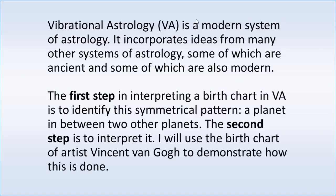So let's learn how we do this. Before I give you the steps for interpreting a chart using vibrational astrology, let me explain what vibrational astrology is. It's a modern system of astrology. It incorporates ideas from many other systems like harmonic astrology, cosmobiology, modern psychological astrology, and Vedic astrology. So it's a relatively new system built upon many other ideas. That's all we need to know for now.